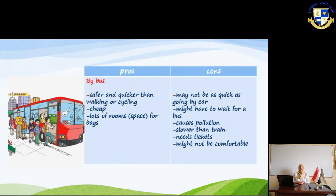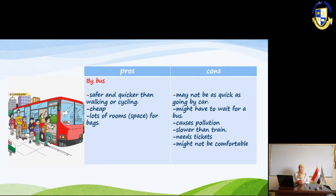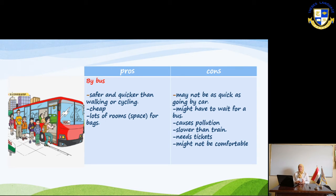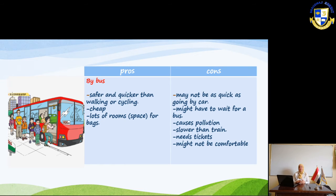In the next slide we learn the pros and cons of going by bus. Going by bus is safer and quicker than walking or cycling. It's cheap and has lots of room or space for bags. But the cons are: it may not be as quick as going by car, you might have to wait for the bus, and it causes pollution.